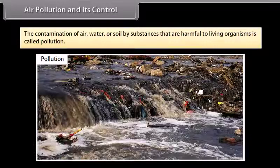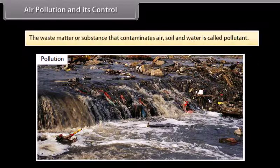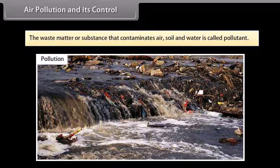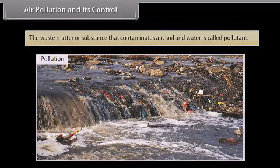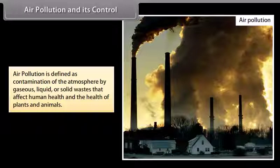Air pollution and its control. The contamination of air, water or soil by substances that are harmful to living organisms is called pollution. The waste matter or substance that contaminates air, soil and water is called a pollutant. Air pollution is defined as contamination of the atmosphere by gaseous, liquid or solid waste that affects human health and the health of plants and animals.